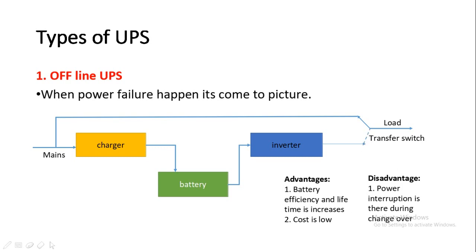The advantages of offline UPS are that battery efficiency and lifetime increase, because the battery and UPS are always in off mode and only come into action when power failure happens, saving battery efficiency. The cost is also low. The disadvantage is there is a power interruption during changeover — when power failure happens, the transfer switch changes the load from main supply to UPS supply, and during that time there will be a small interruption of about 5 to 10 seconds. That is why this type is called offline UPS.